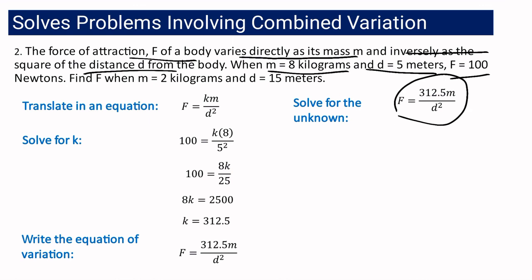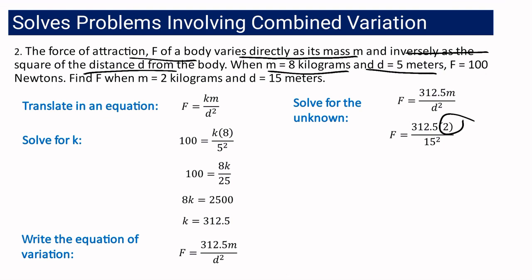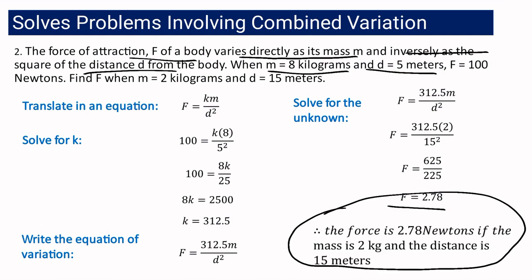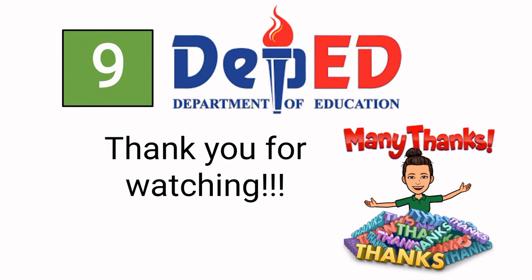Using the equation to find the force when mass is 2 kilograms and distance is 15 meters: f equals 312.5 times 2 over 15 squared, which is 625 over 225, equal to approximately 2.78 newtons. Therefore, the force is 2.78 newtons when the mass is 2 kilograms and the distance is 15 meters. We are done with module 3 on combined variation. Thank you for watching.